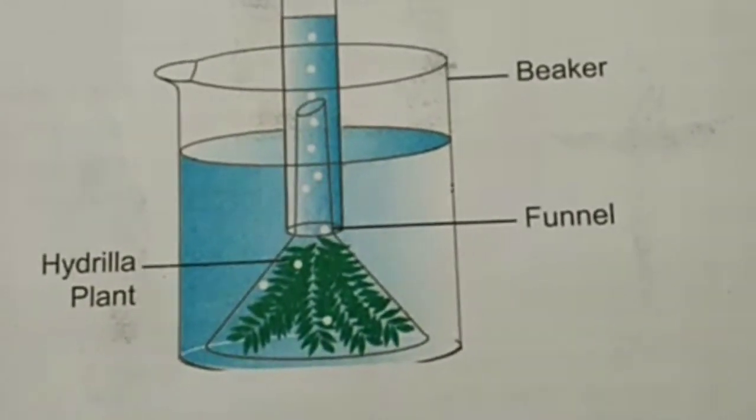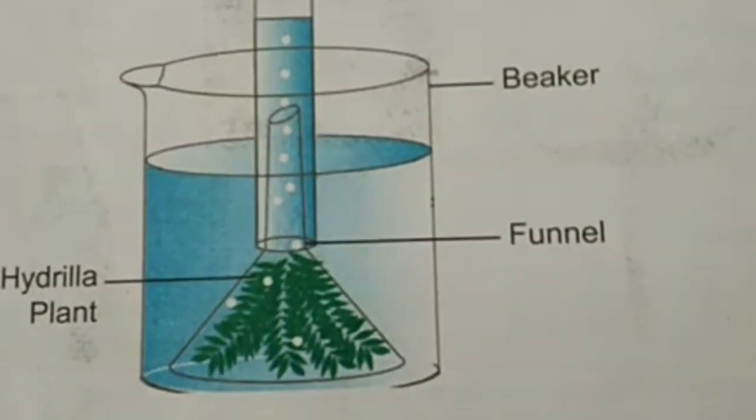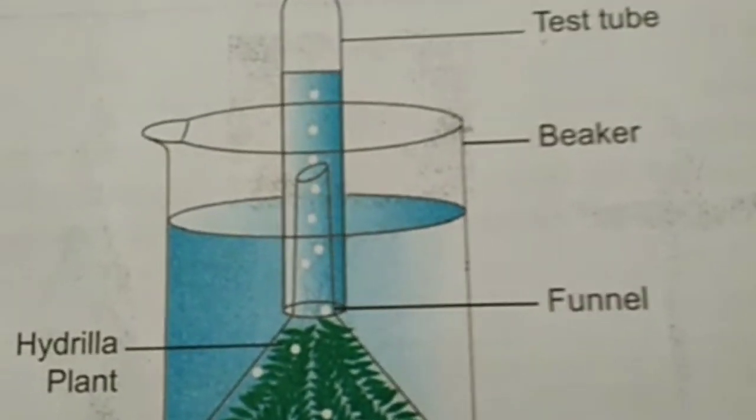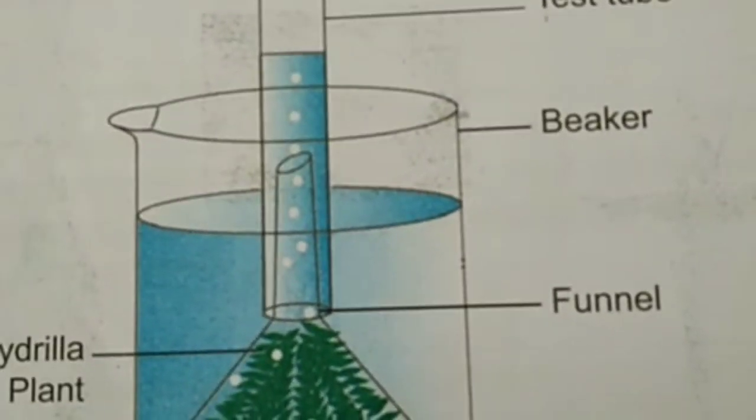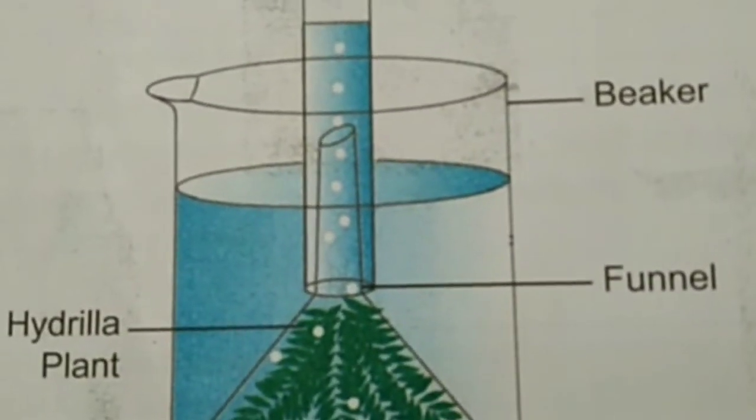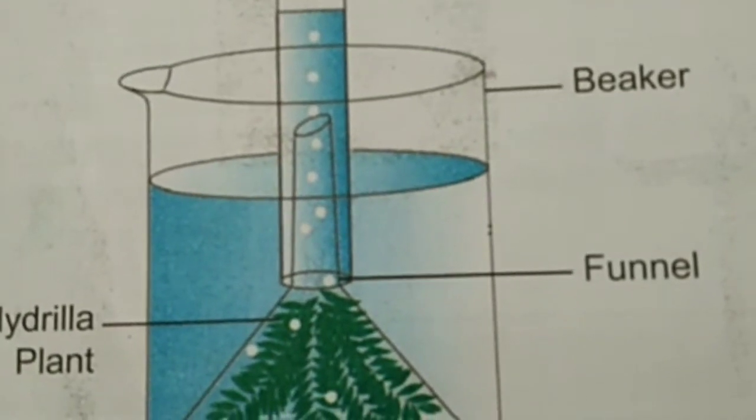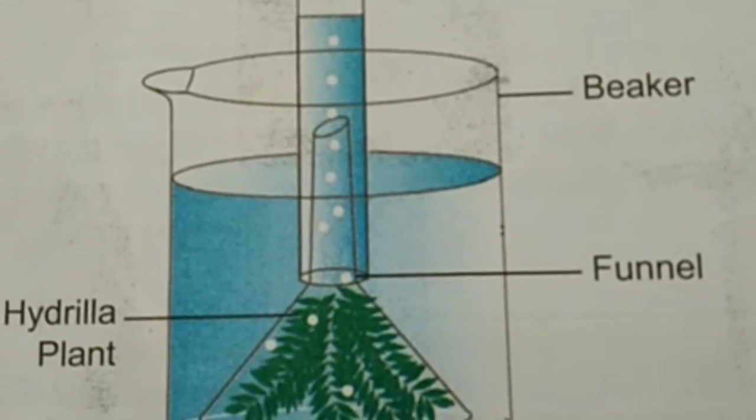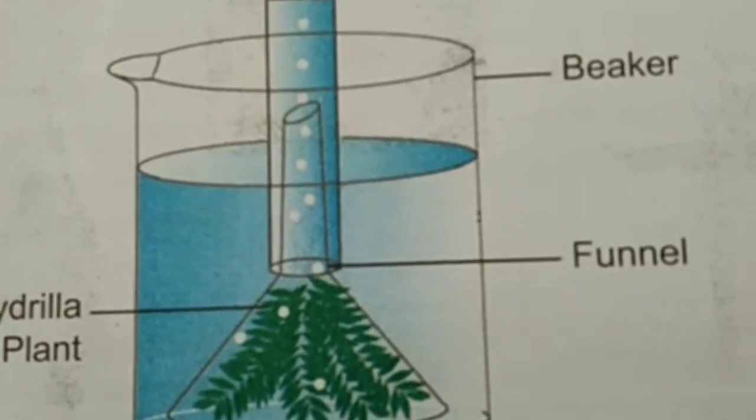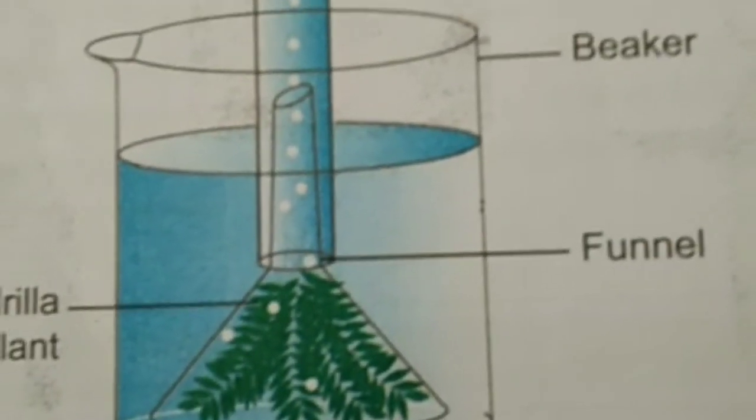Now how to write photosynthesis in the exam? First of all, the aim: to prove that oxygen is evolved during photosynthesis. Then materials required: test tube, funnel, beaker, water, and Hydrilla plant.